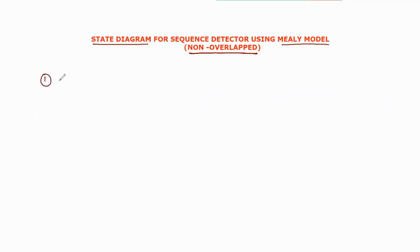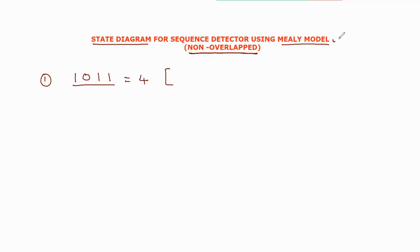Here, I will show you the first example. The first example is the 1011 sequence. I will detect this sequence. Here I have 4 bits. If I have 4 bits, I have 4 states: S0, S1, S2, and S3.